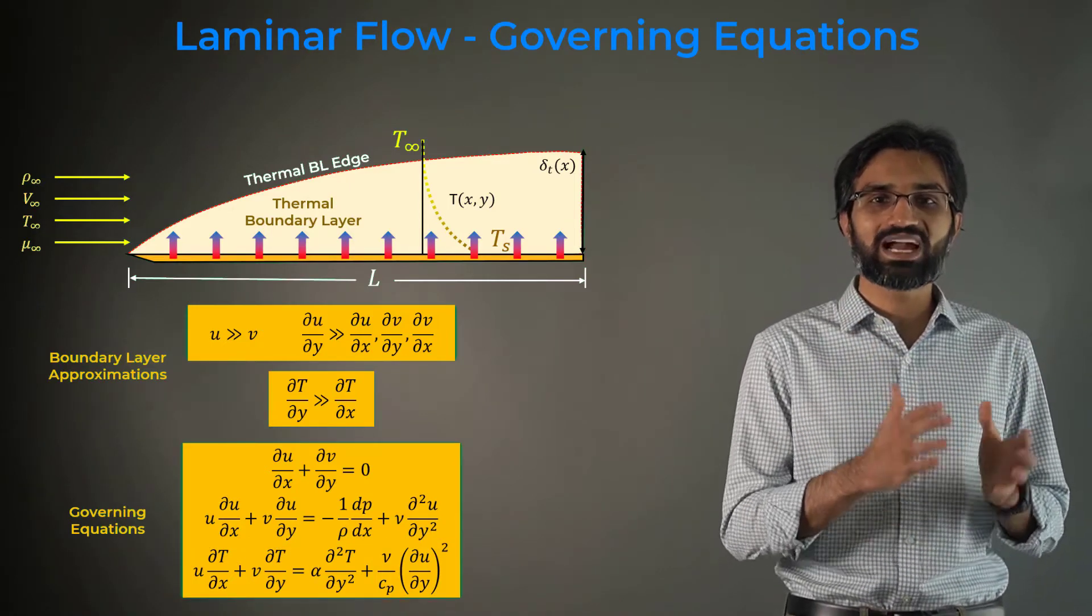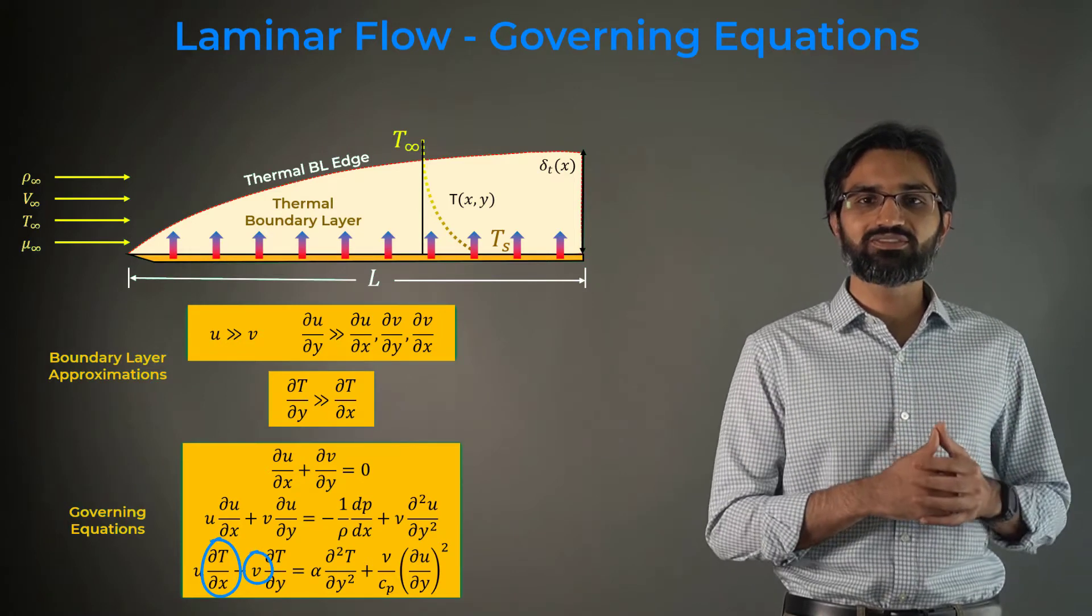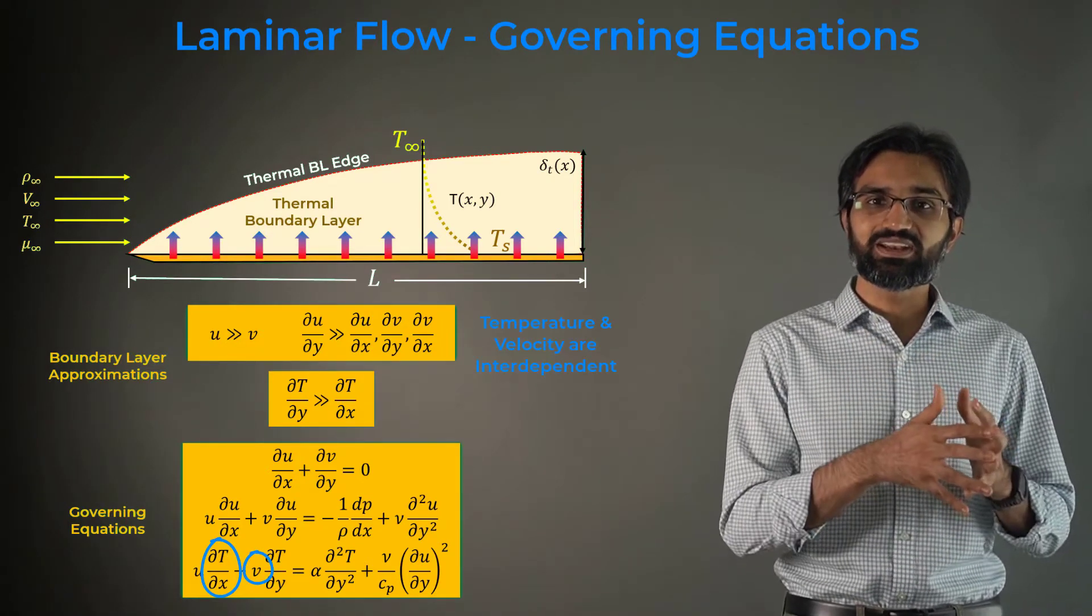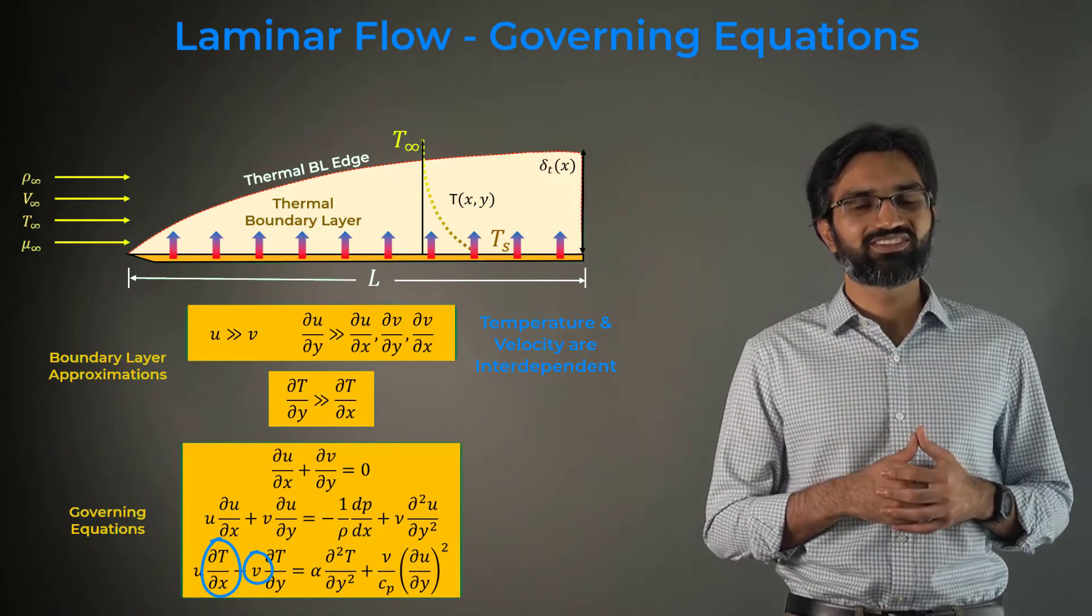A closer look at these equations will tell us that the temperature and velocity fields are coupled. This means they are interdependent and a temperature solution is necessary to solve for the fluid velocity.